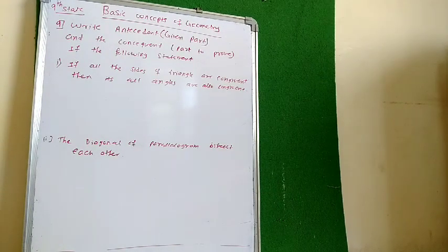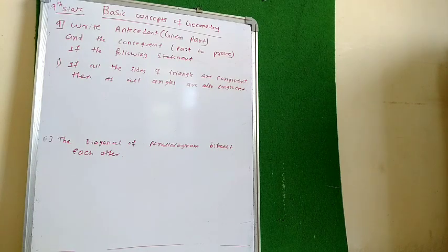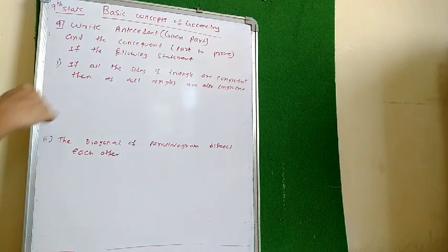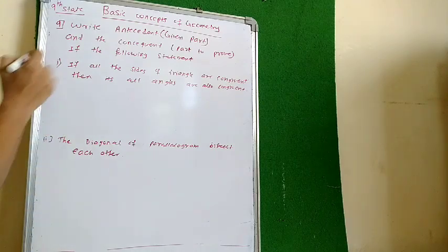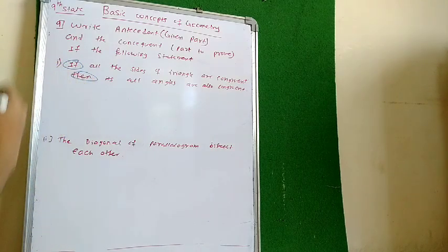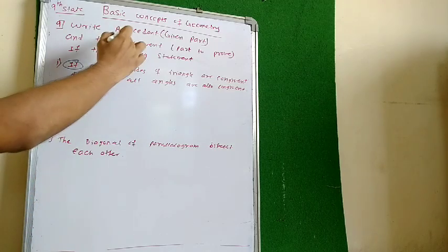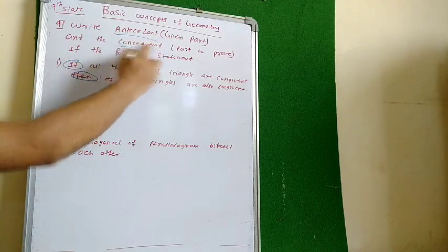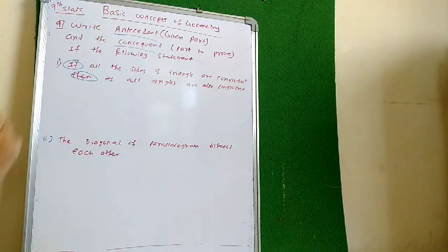In the ninth question, write the antecedent — that is, the given part — and the consequent — that is, the part to be proved — of the following statements. If in the statement we have 'if' and 'then', then it is very easy to write the antecedent and consequent.